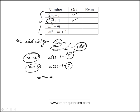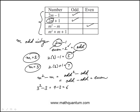For M squared minus M, if M is odd, odd squared minus odd. Odd squared is odd — odd times odd. Odd minus odd is even. So this would be even. Or you could verify: 3 squared minus 3, 9 minus 3 is 6.